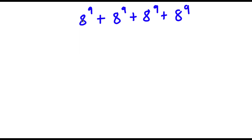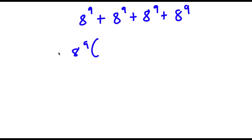Alright, so I have 8 to the power of 9, plus 8 to the power of 9, plus 8 to the power of 9, plus 8 to the power of 9. To solve this, I'm going to first start by factoring out 8 to the power of 9. So now I have 8 to the power of 9 times — since 8 to the power of 9 divided by 8 to the power of 9 is simply 1 — I have 1 plus 1 plus 1 plus 1.